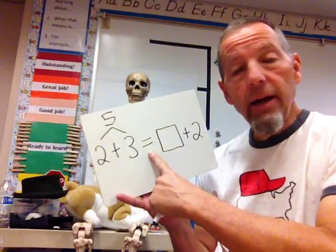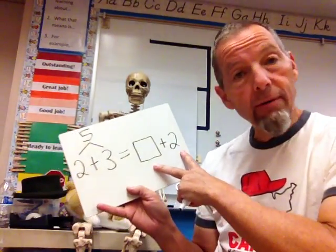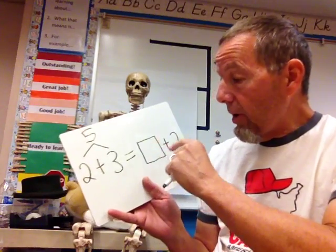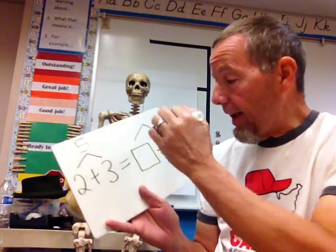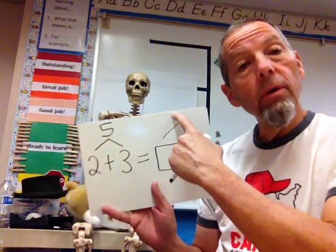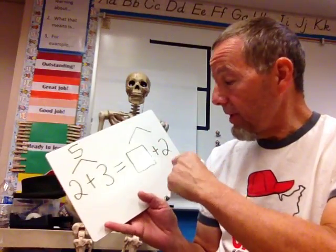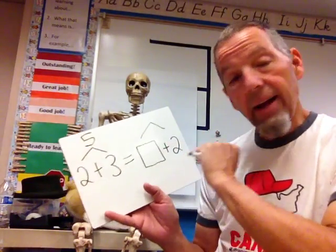Now this equal sign tells me that whatever's over here has got to be the same as whatever's over here. So, I'm going to go ahead and put this here, and whatever I put in here it's got to equal 5 because that's what this is. Something plus 2 has got to equal 5.